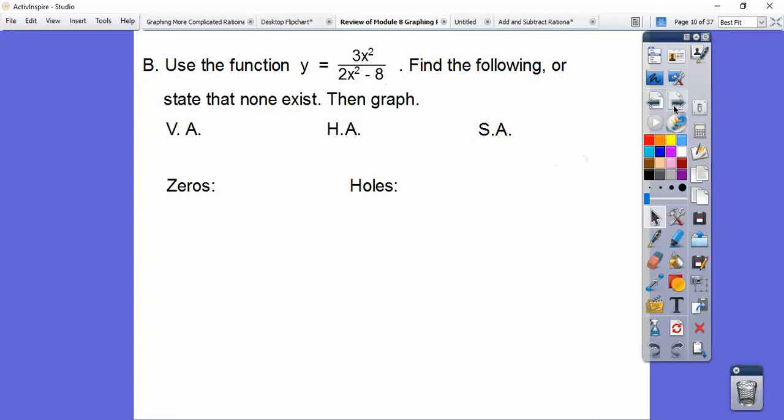All right, of course, let's go ahead and factor that guy. So if we pull a 2 out of 2x squared minus 8, it gets us 2 times x squared minus 4, and then x squared minus 4 factors to x plus 2, x minus 2.